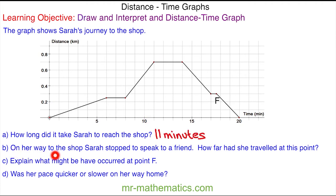For part B, on her way to the shop Sarah stopped to speak to a friend. How far had she traveled at this point? As she sets off from home you can see at this point the distance is constant, so she is talking to her friend here, which is six minutes. At this point she resumes her journey to the shop, which is eight minutes. At this point she has traveled approximately 0.25 kilometers.